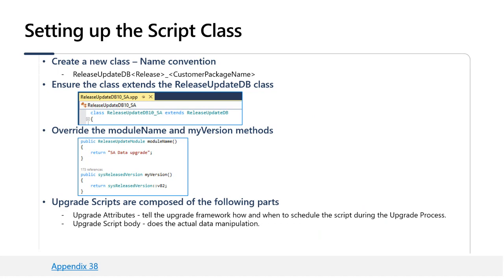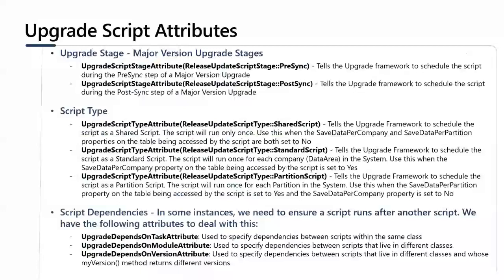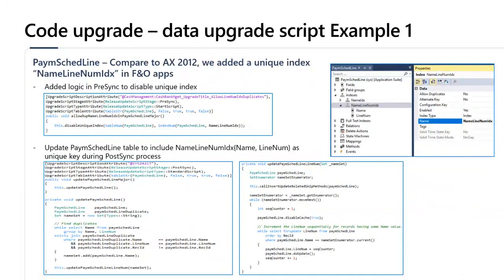Different upgrade script attributes describe different stages, script types, and script dependencies. Coming from AX 2012, it's a major upgrade, and the main stages are presync and postsync. Different script types are shared script, standard script, and partition script. Script dependencies ensure a script runs after another script under different conditions. These attributes are used when writing a script for your customization to ensure data is moved correctly in 365. If scripts are not in place, there will be data loss.